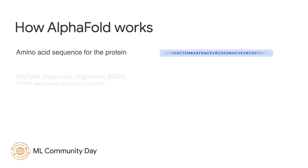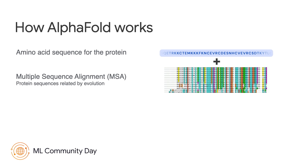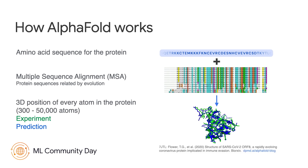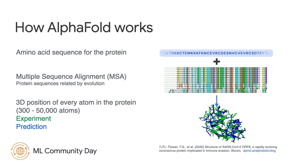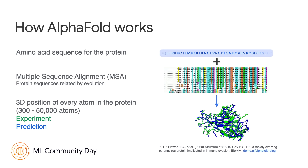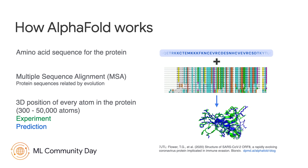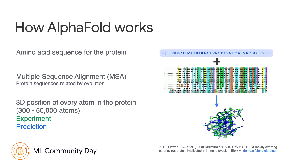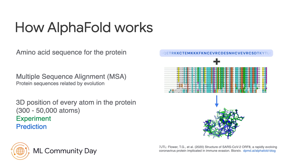AlphaFold uses deep learning to predict the 3D shape of proteins from their sequence of amino acids, almost like translating between languages. And as with many modern language models, it makes use of attention mechanisms, along with a number of other neural network architecture innovations. If you want to know more, please read our blog posts and paper.